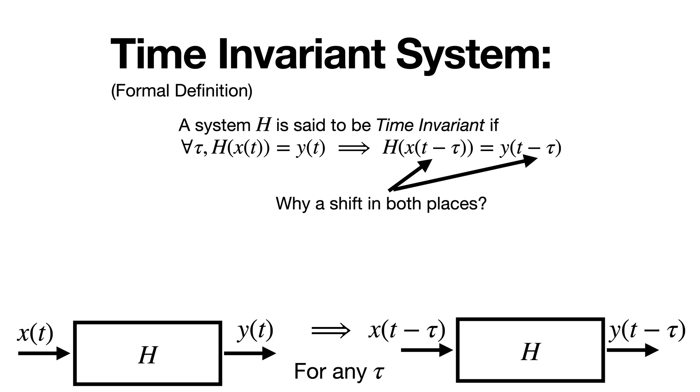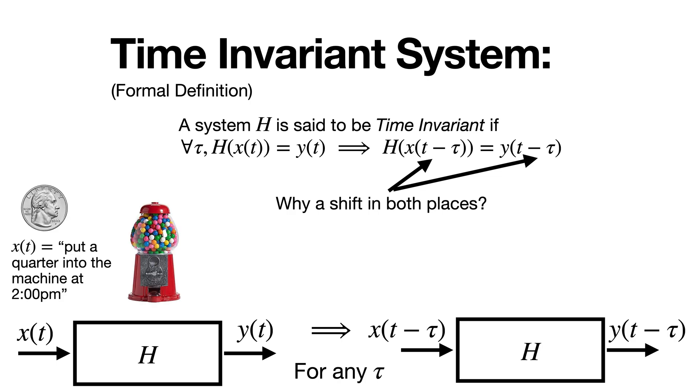So here's a concrete example. Let x of t represent the signal of me putting in a quarter to a gumball machine at 2pm, and h in this case is the gumball machine or putting the quarter in and twisting the thing. x of t is not going to show anything until t equals 2 o'clock pm, where it's going to jump up to indicate me putting the quarter in. And let y of t represent me getting a gumball from the machine. This is also going to be zero until t equals 2pm.